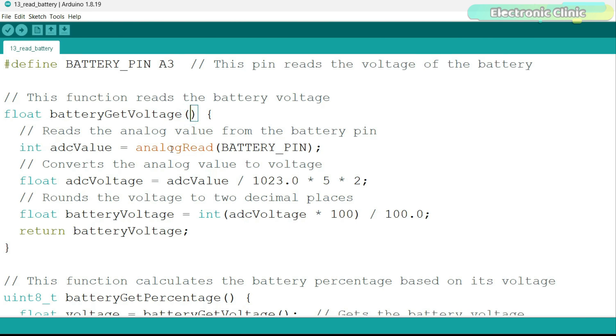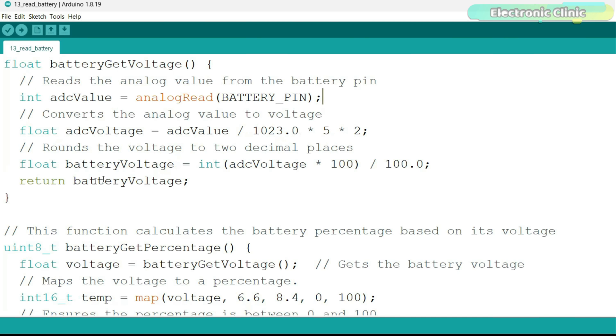We read the battery pin using the analog read function and then store the value in variable ADC value. Next, we convert this value into voltage. Next, we round the voltage value to two decimal places. And then finally, we return the battery voltage.